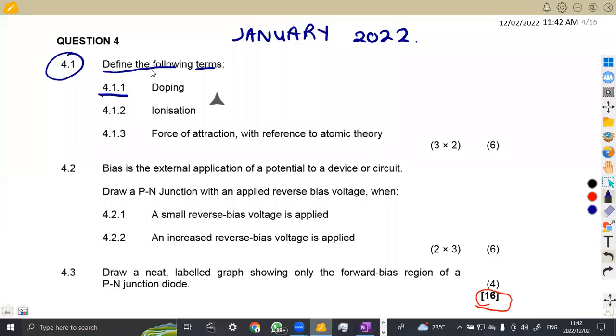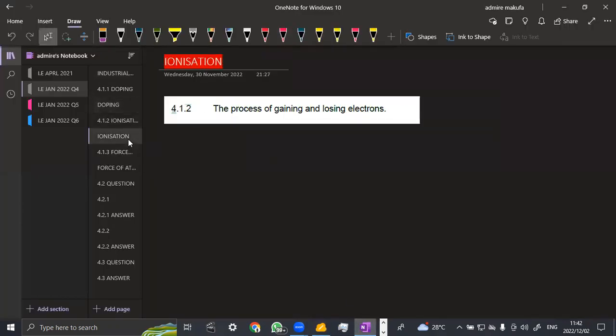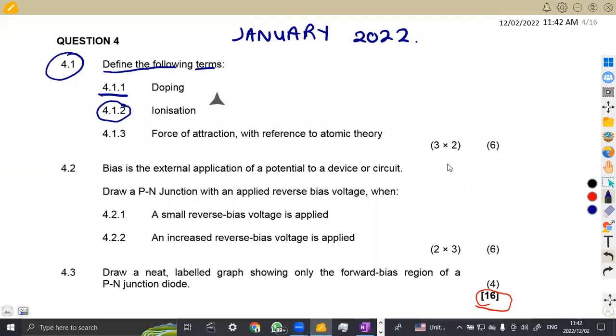4.1.2, ionization. What do we have there on ionization? Ionization, this is the process of gaining electrons, and also it can be losing electrons. So the process of gaining and losing electrons, that is the ionization part, and we've got actually two marks for that because it's three times two.